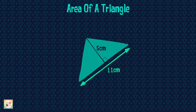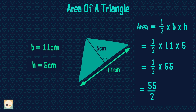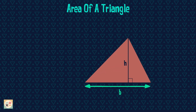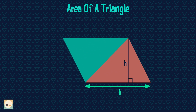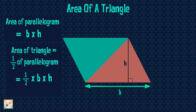This triangle has a base length of 11 cm and a height of 5 cm. Let's use the formula to calculate the area by substituting in the values of the measurements we have been given. Don't forget to include the squared units in your answer, in this case centimeters squared. But why does this formula work? Well, if we create a duplicate of this triangle and fit them both together, we can see this makes a parallelogram. The formula for a parallelogram is base times perpendicular height. The parallelogram is made up of two of the same triangles, therefore the area of the triangle would be half of the area of the parallelogram — so half of the base times height.